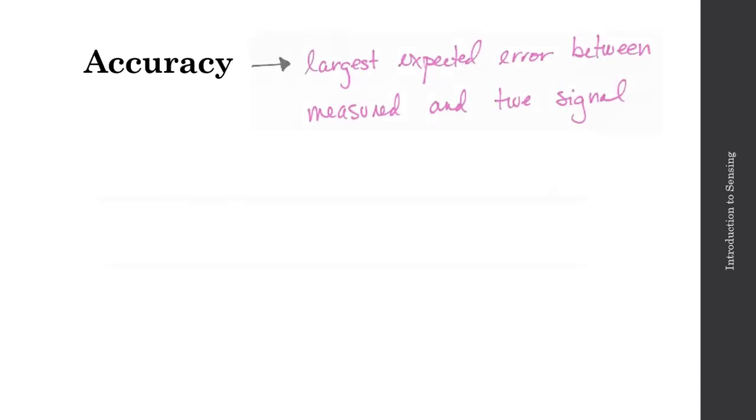The accuracy of your sensor is described as the largest expected error between the measured signal and the true signal. So the error E, that'll be the measured value minus the true value. And typically, we're taking multiple measured values and comparing that to the true. So there is some statistical nature to this error.